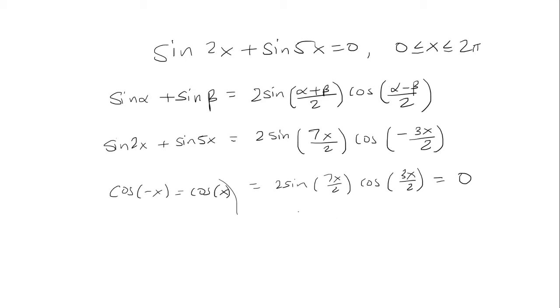And that means that 2 sine 7x over 2 equals 0, or cosine 3x over 2 equals 0. I'm going to divide both sides by 2, so we'll have sine of 7x over 2 equal to 0, or cosine 3x over 2 equals 0.